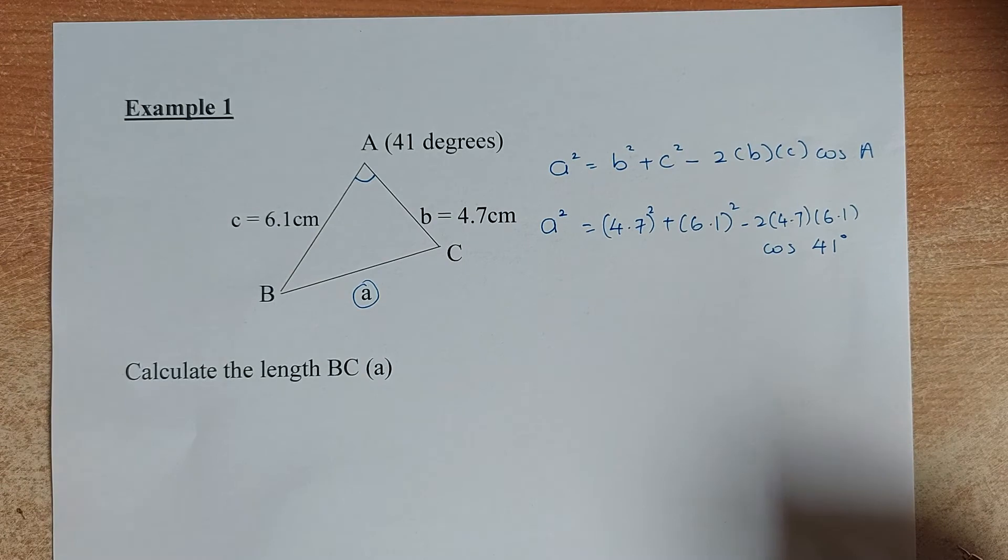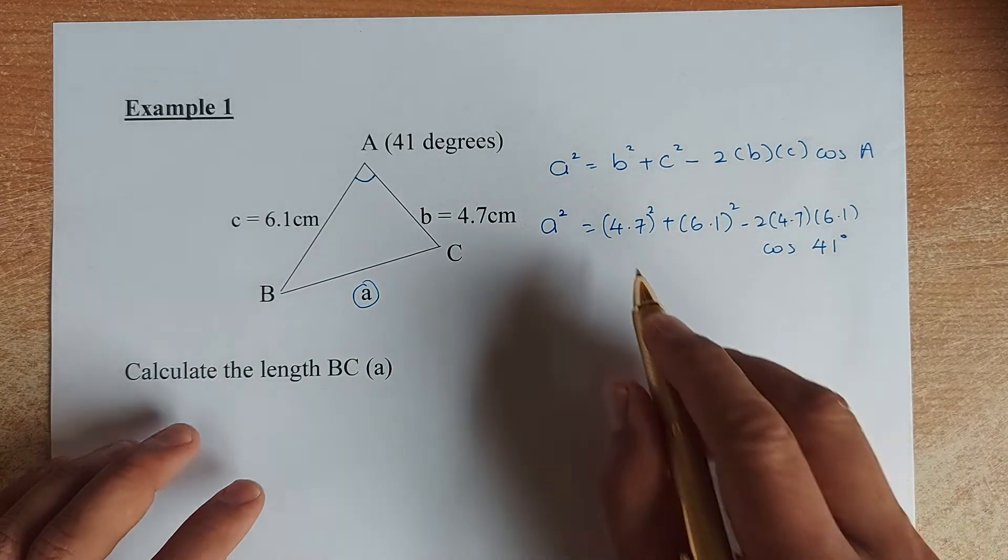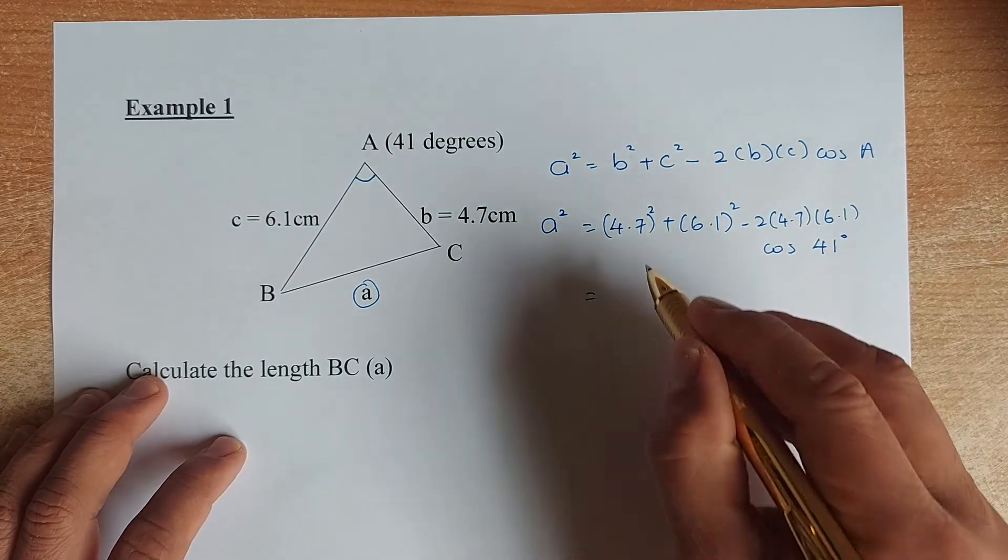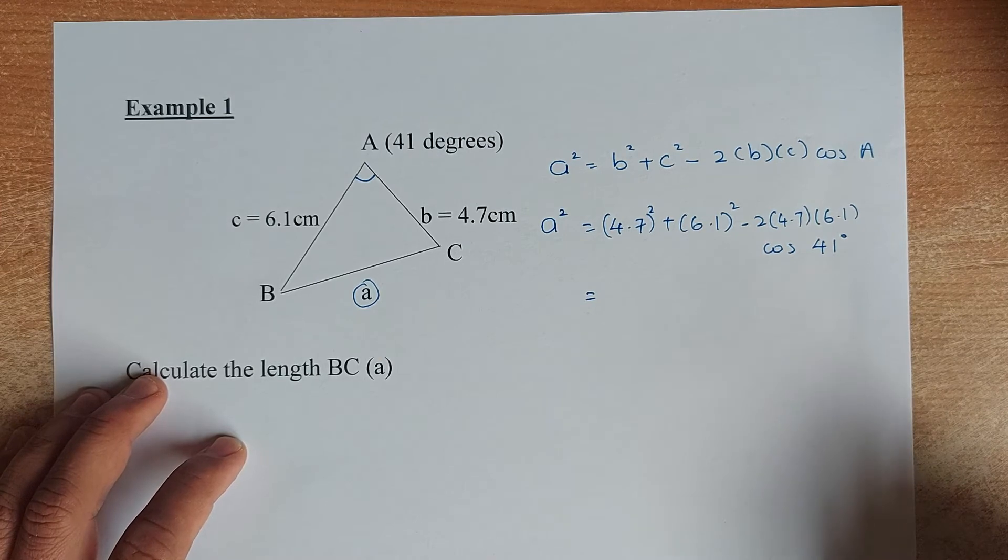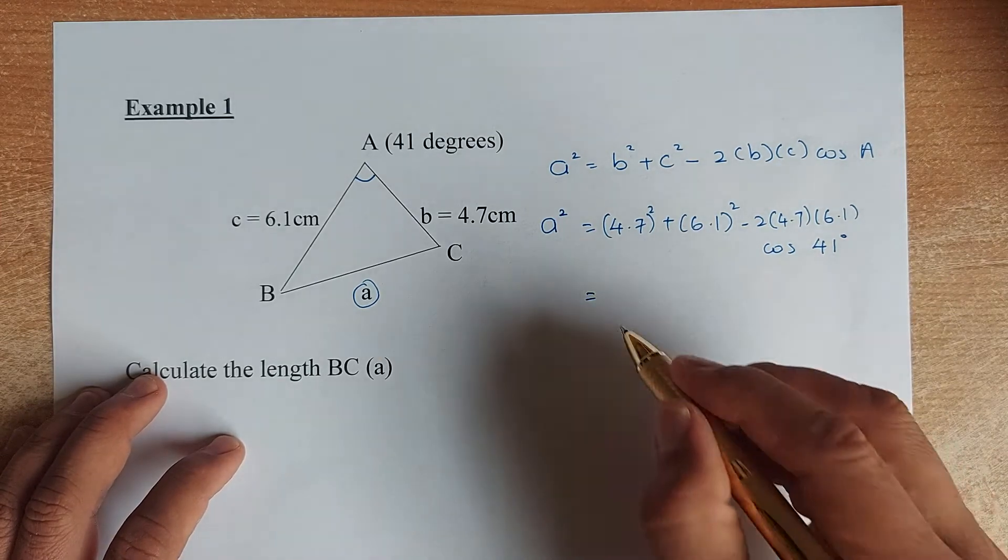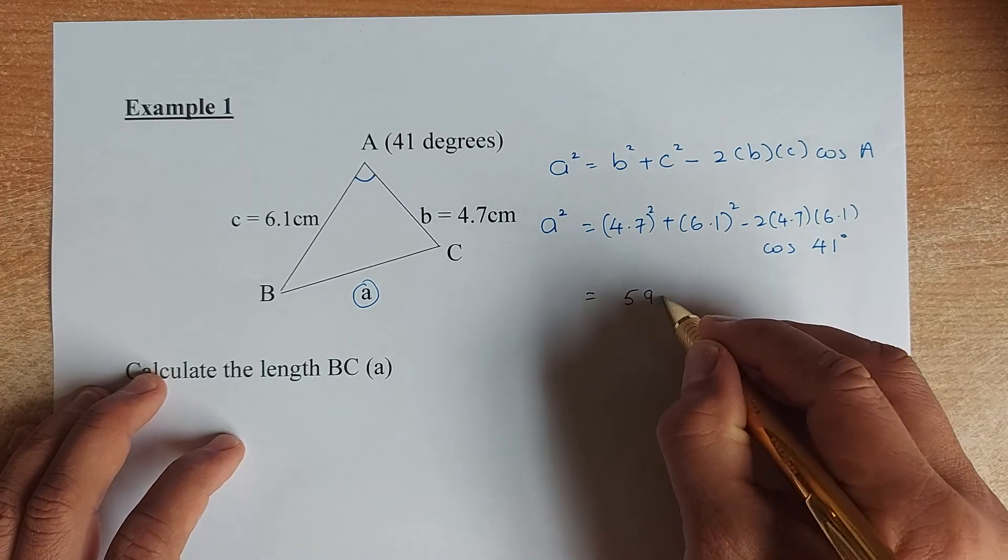So we will do slowly. We shall do the first part first. Put in your calculator 4.7 squared plus 6.1 squared and we come up to 59.3.